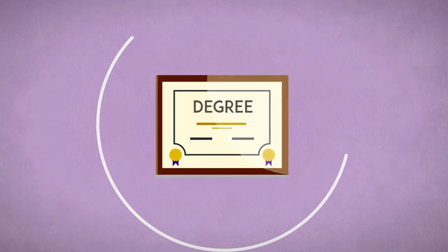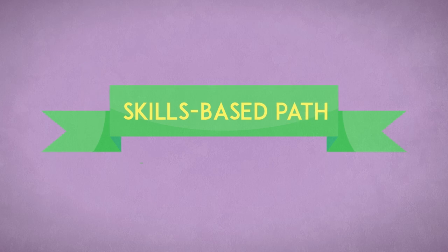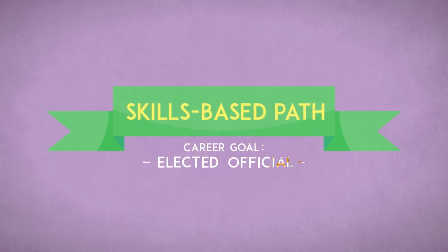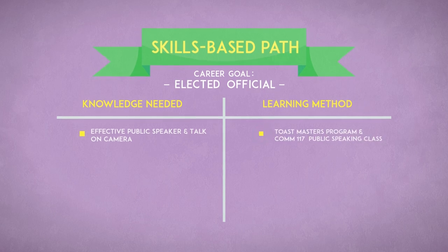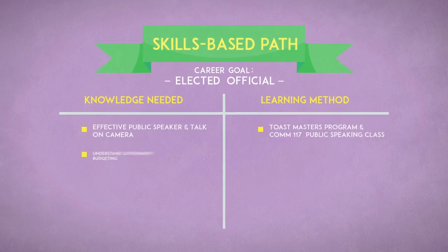Rather than approaching the question in the context of a traditional education plan, start by thinking about the skills one would need to become a successful elected official. One might need to learn public speaking and how to talk on camera through a Toastmasters program, and understand government budgeting by interning for a city council member.